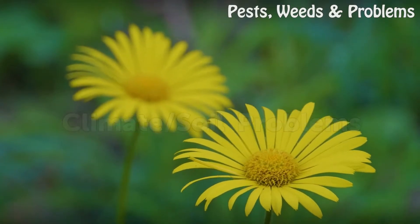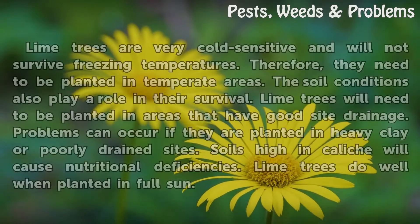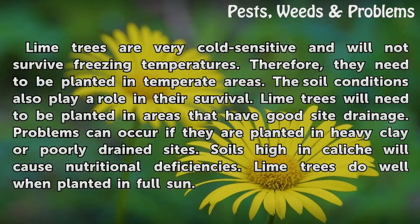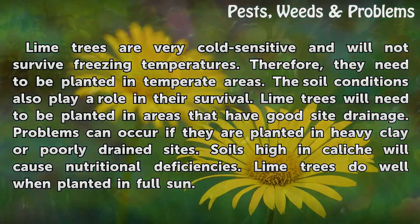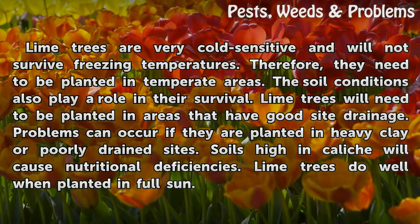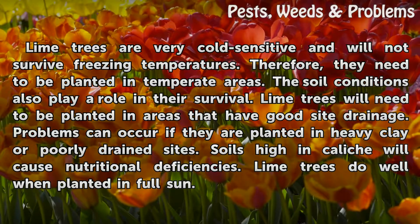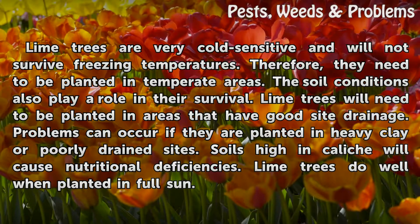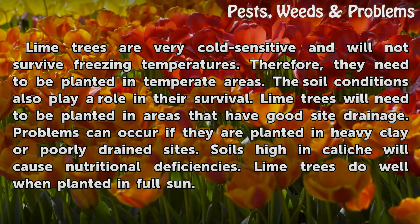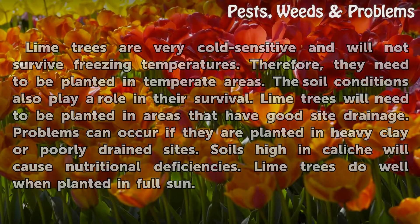Climate and Soil Problems. Lime trees are very cold sensitive and will not survive freezing temperatures. Therefore, they need to be planted in temperate areas. The soil conditions also play a role in their survival. Lime trees need to be planted in areas with good drainage. Problems can occur in heavy clay or poorly drained sites. Soils high in caliche will cause nutritional deficiencies. Lime trees do well when planted in full sun.